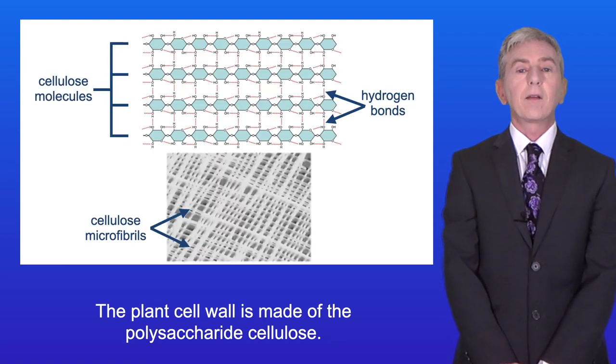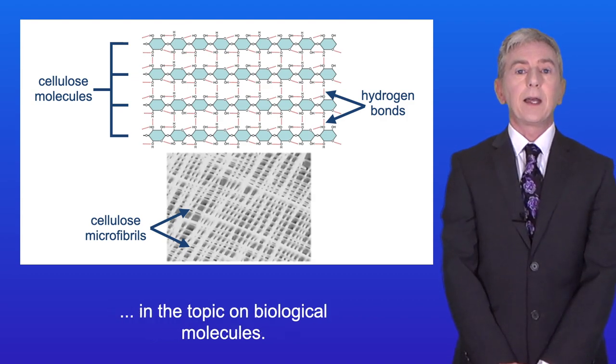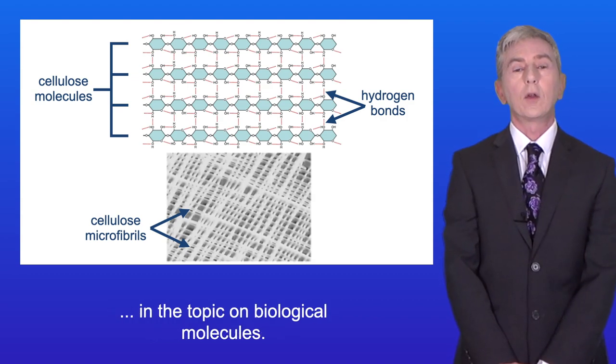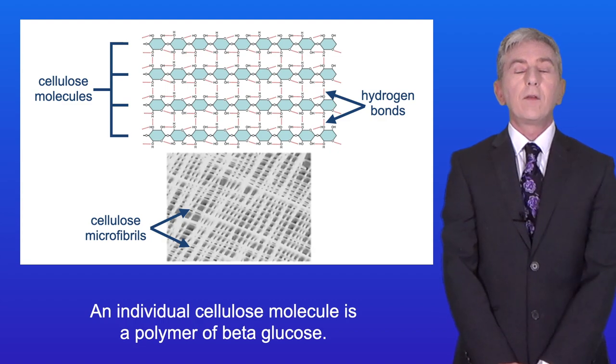The plant cell wall is made of the polysaccharide cellulose. Now we're going to be looking at cellulose in detail in the topic on biological molecules. An individual cellulose molecule is a polymer of beta glucose.